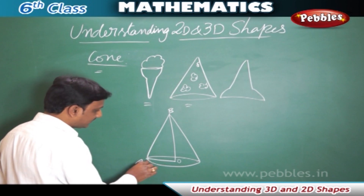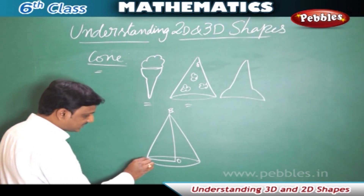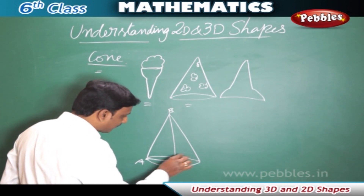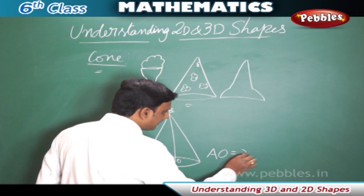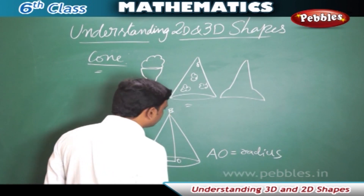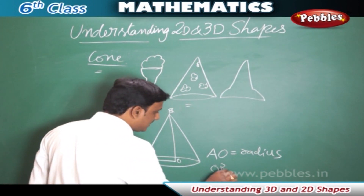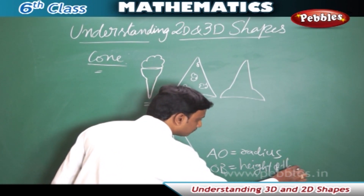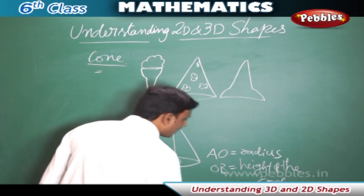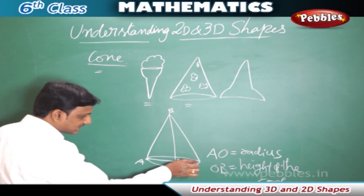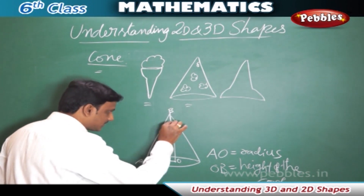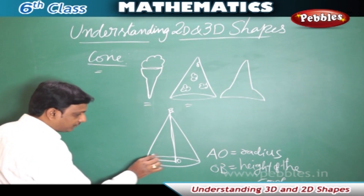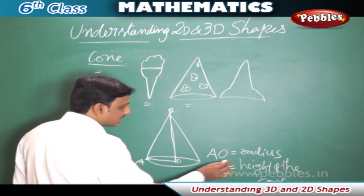If we mark three points A, O, and B on the cone: the distance from the edge of the circular base to the center, that is A to O, is the radius of the cone. The distance from the center of the circular base O to the tip B is the height of the cone. So the height goes from the circular end up to the tip of the cone.